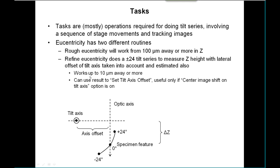What it comes up with at the end, and you'll see this a lot in the videos, is that it gives you an estimate of the tilt axis offset. You can use that result to set the tilt axis offset in the image shift in the tasks menu. But again, this is only useful if you have that center image shift on tilt axis option in the Align Focus panel that I showed you turned on.